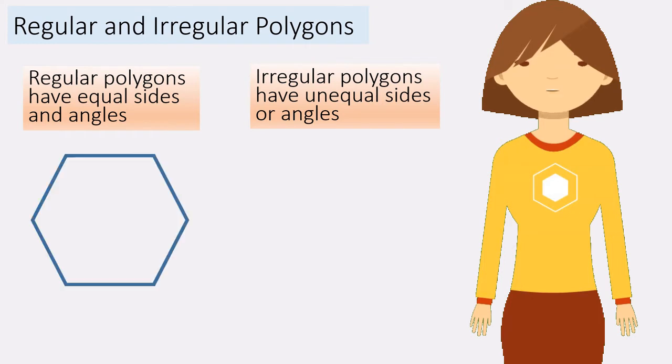For example, in a hexagon all the sides and angles are equal, so it's a regular polygon.